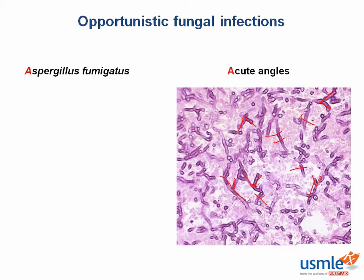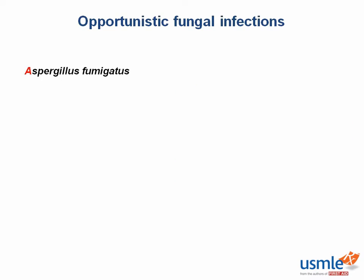The key diseases caused by Aspergillus include allergic bronchopulmonary aspergillosis, or ABPA, where it stimulates an IgE response leading to bronchospasm. ABPA is more common in patients with asthma and cystic fibrosis. On a complete blood count, you'd see eosinophilia — an increase in eosinophils.